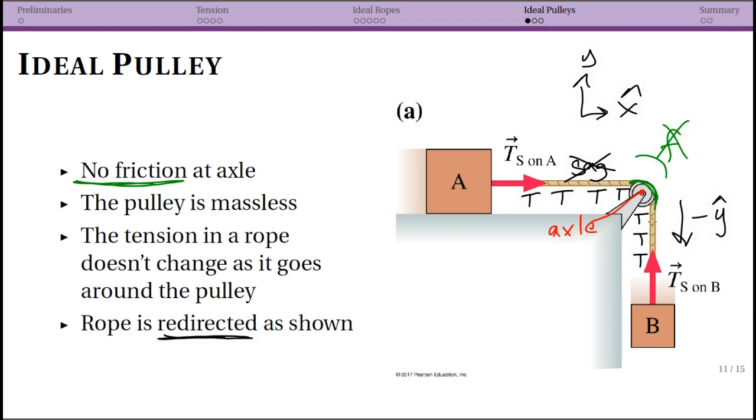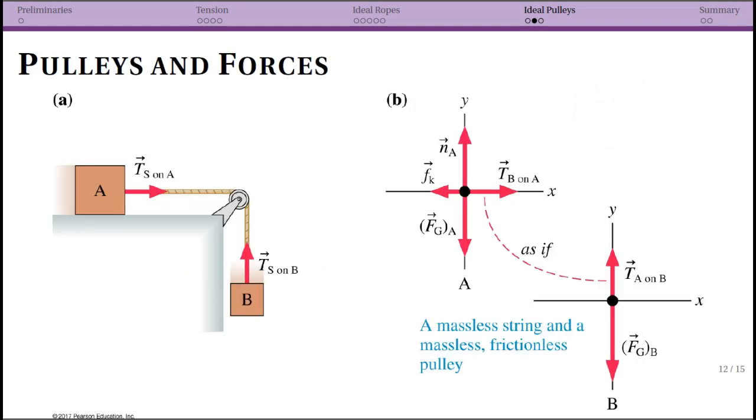There's a couple of subtleties about this that specifically comes in with acceleration constraints and if you have multiple pulleys. You've seen a picture like this before when we had acceleration constraints. In our XY coordinate system, the acceleration of A will equal plus a x hat, and the acceleration of B, if block A goes to the right block B goes down, will be negative a y hat. These are literally the same a. This was your acceleration constraint.